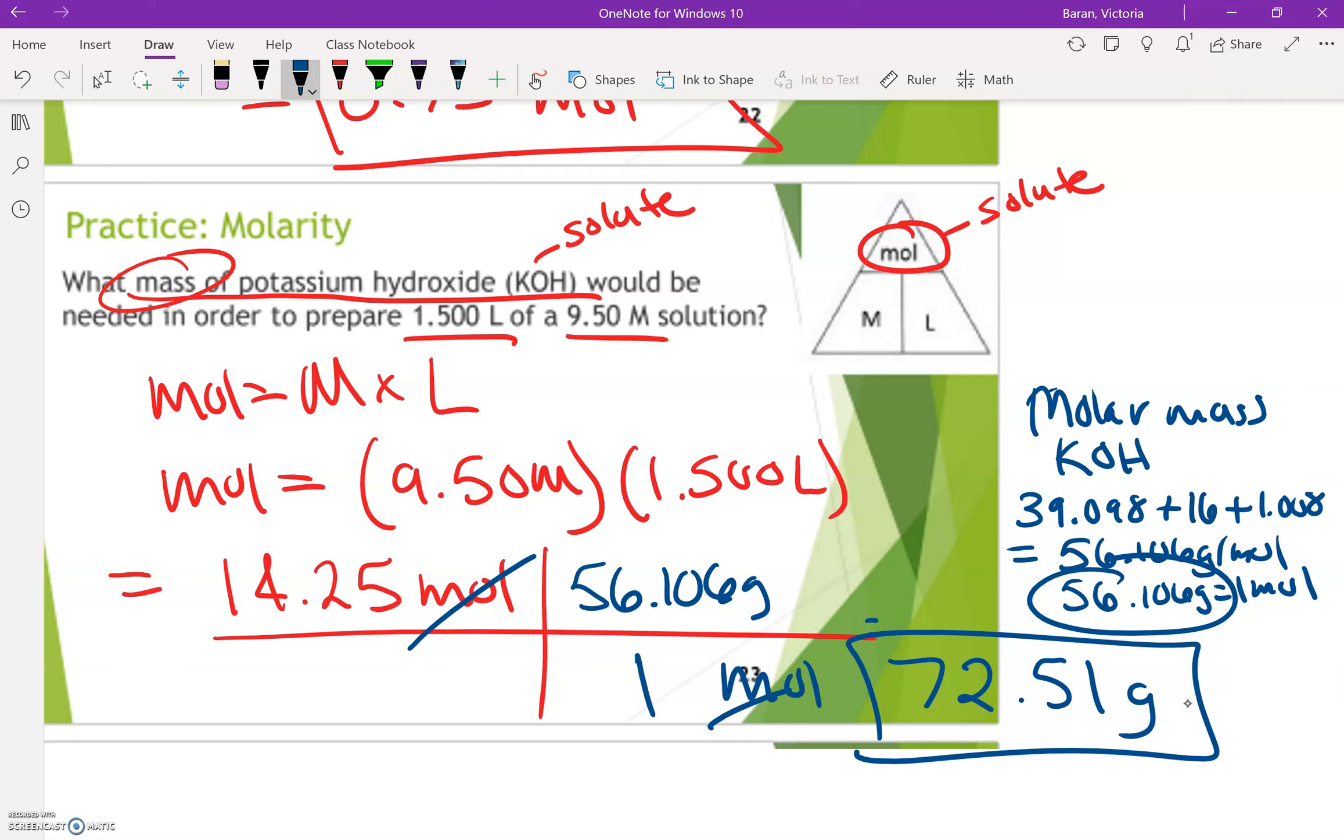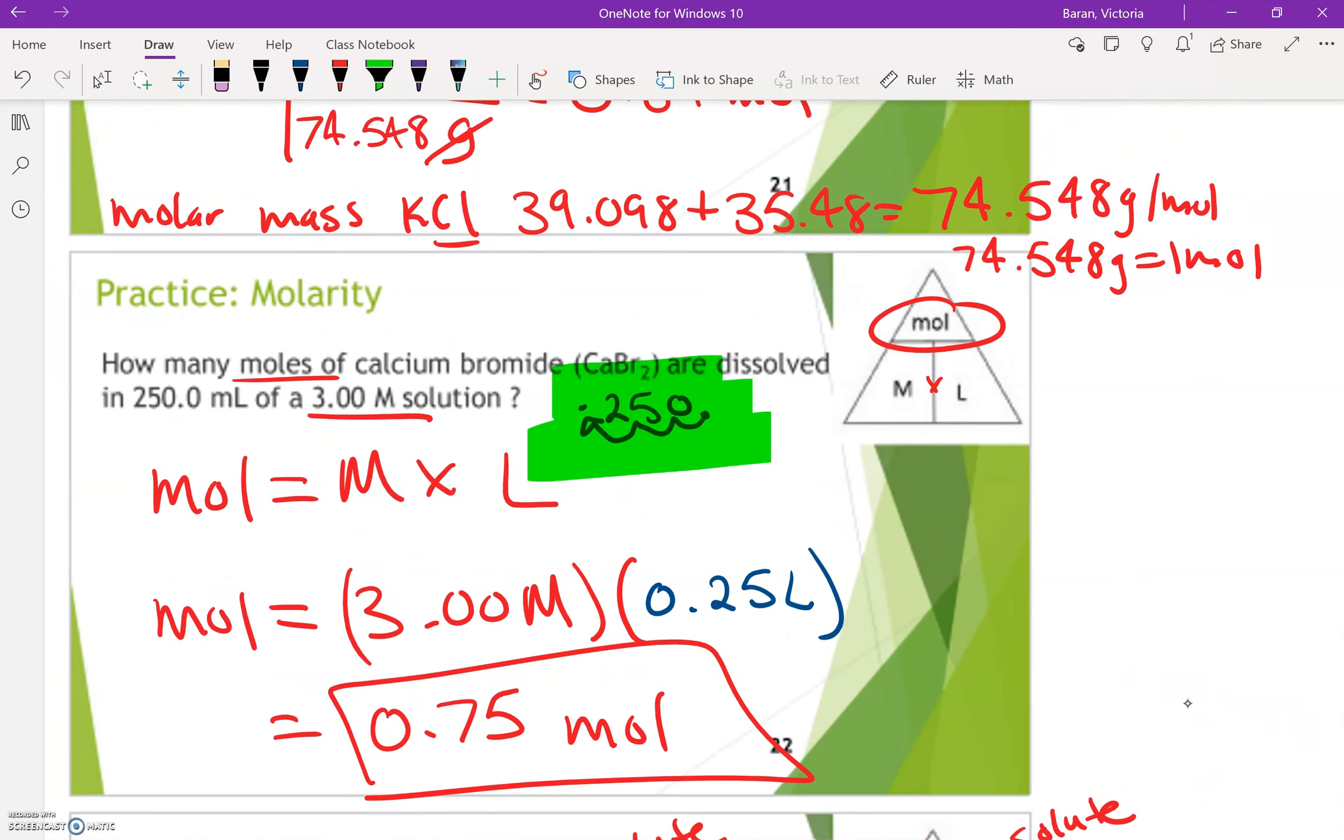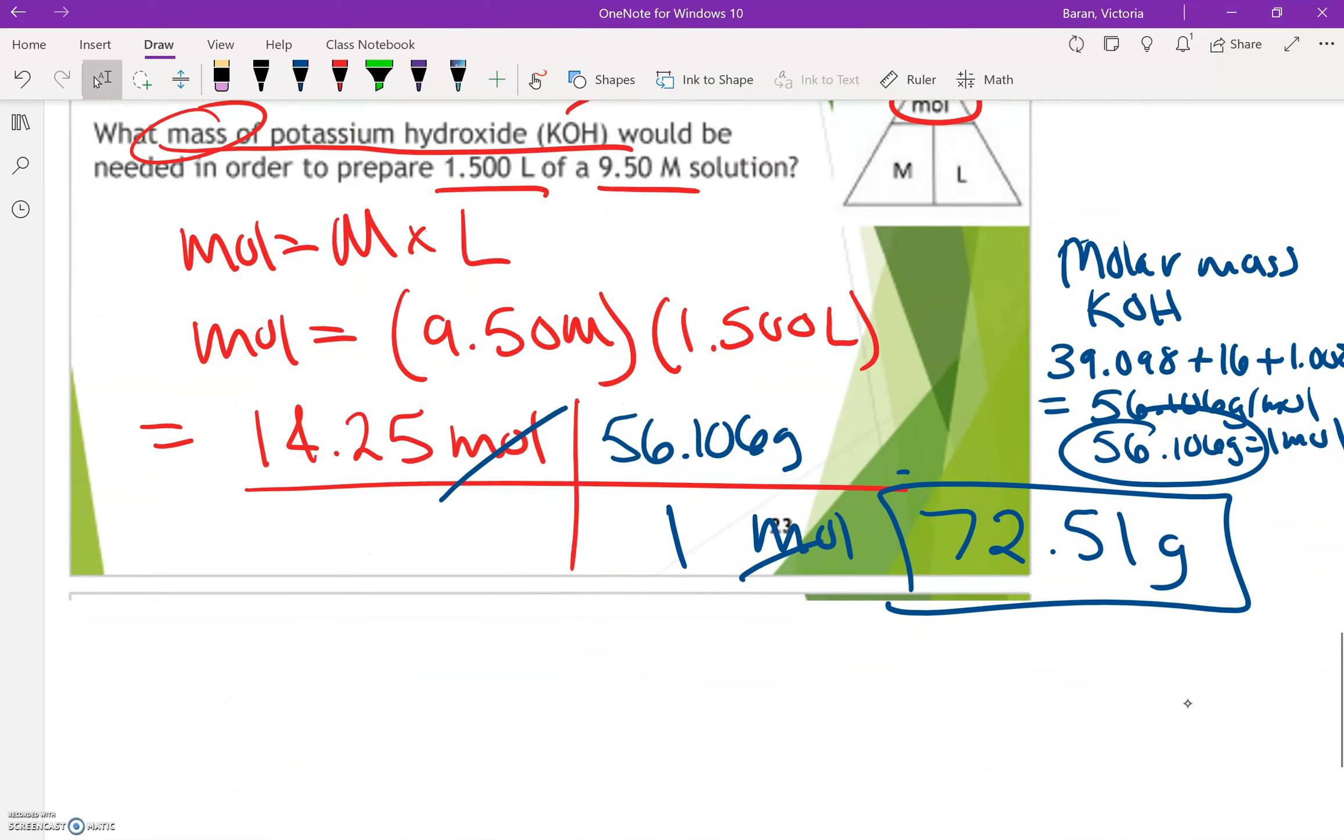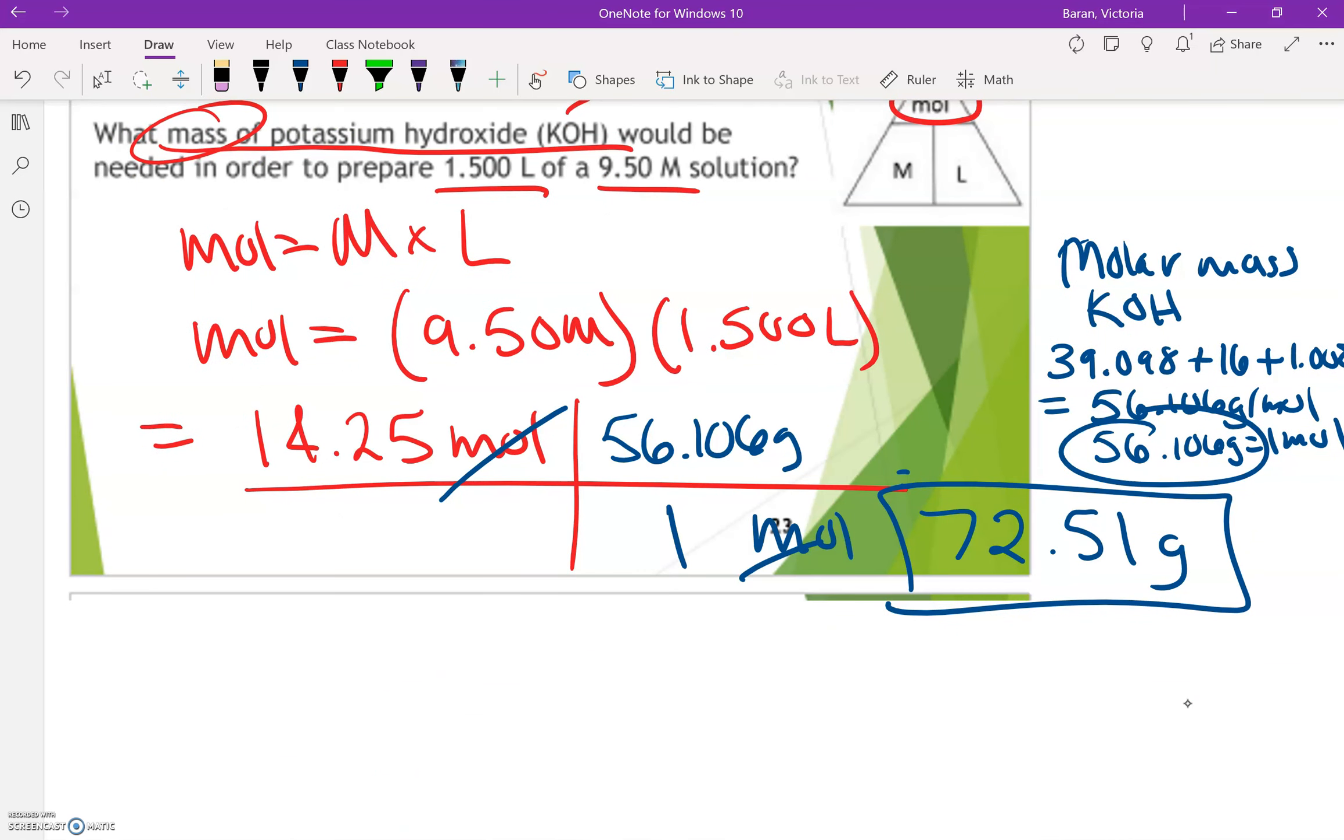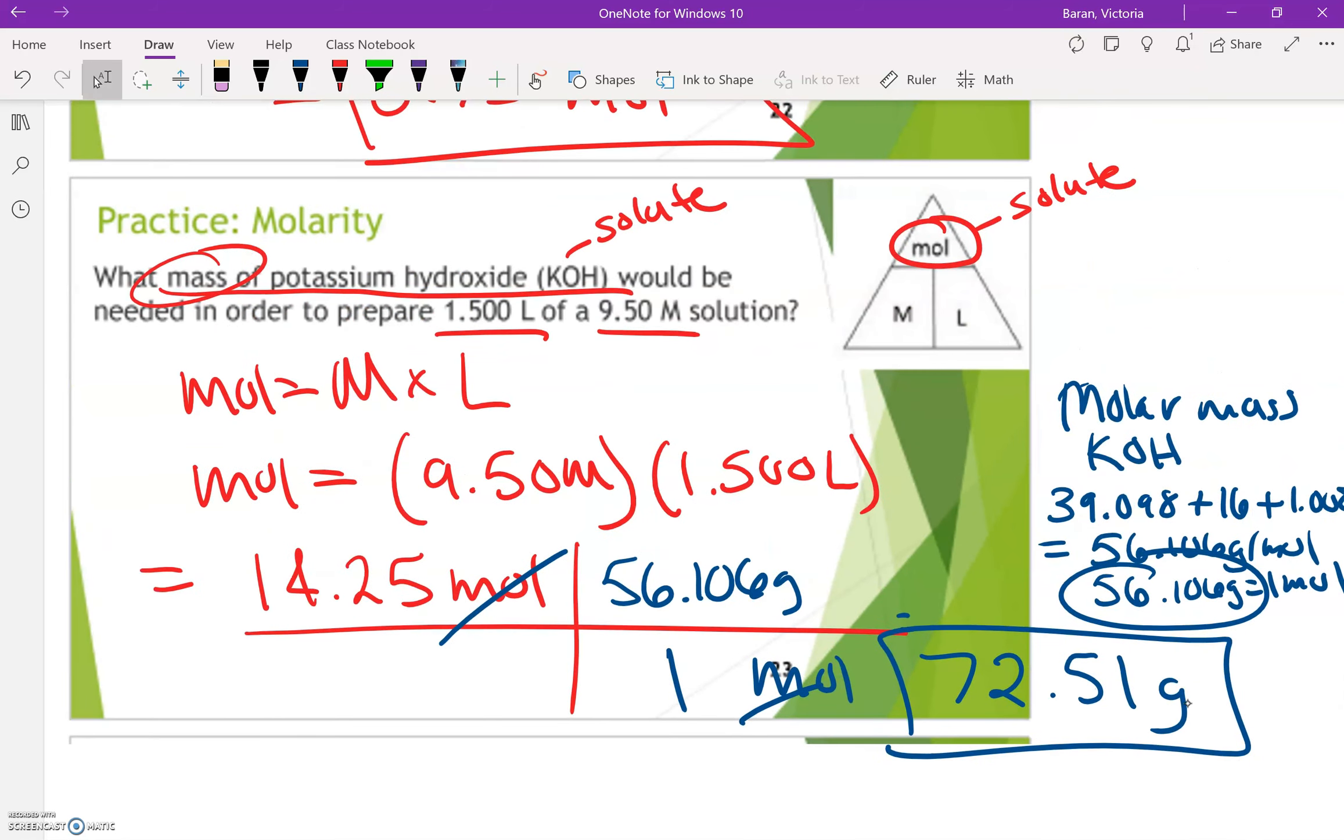So when calculating molarity problems, you have to first figure out what equation are you going to use? And you can use the triangle to help you figure that out. What is it you are solving for? And then sometimes you might have to either do some conversions with milliliters and liters, or you might have to do something with molar mass, converting moles into grams or grams into moles.